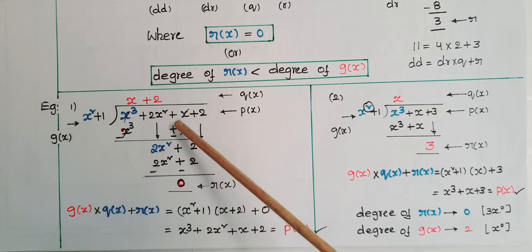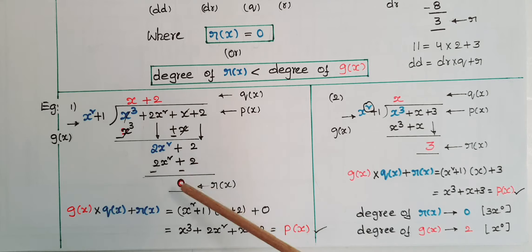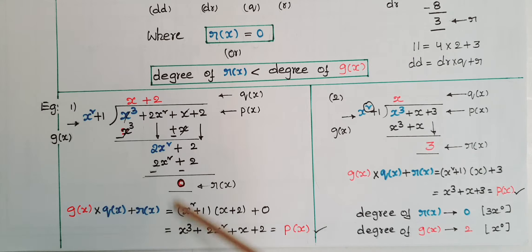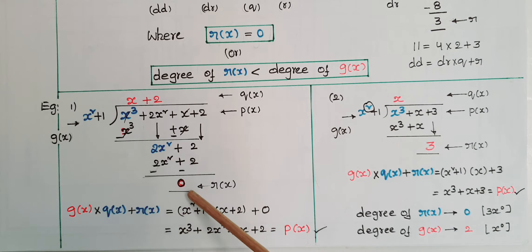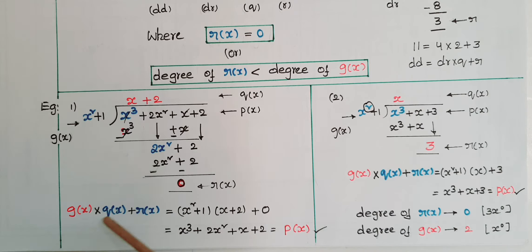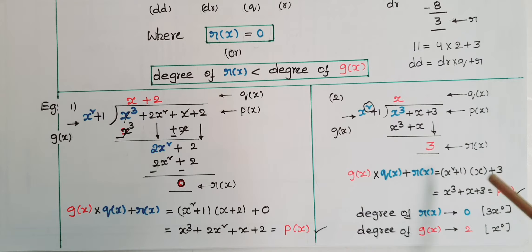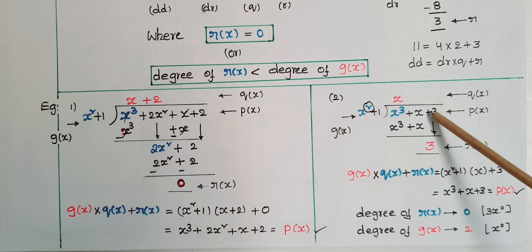For example, if you divide x³ + 2x² + x + 2 by x² + 1, you get quotient x + 2 and remainder 0. You can check: g(x)·q(x) + r(x) = (x² + 1)(x + 2) + 0 = x³ + 2x² + x + 2, which equals p(x). So g(x)·q(x) + r(x) = p(x).